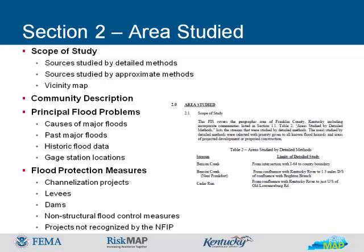Dams are man-made structures built across a stream or river that impound water and reduce the flow downstream. Dams are often used to create retention basins, reservoirs, and ponds. For a dam, the information in this section includes the type of dam (earthen, concrete, or other), the name of the agency or organization that constructed the dam, date of construction, name of the agency or organization that maintains the dam, purpose of the dam, and historical performance of the dam.